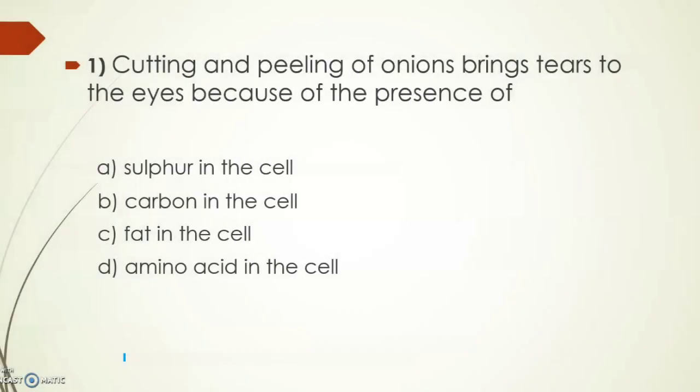Our very first question is: cutting and peeling of onion brings tears to the eyes because of the presence of what? The options are sulfur in the cell, carbon in the cell, fat in the cell, and amino acid in the cell. Its correct answer is option D, amino acid in the cell. Don't be confused between option A and option D. It's not because of sulfur, it's because of sulfur-containing amino acid that tears are produced in our eyes. And which acid? H2SO4, sulfuric acid.